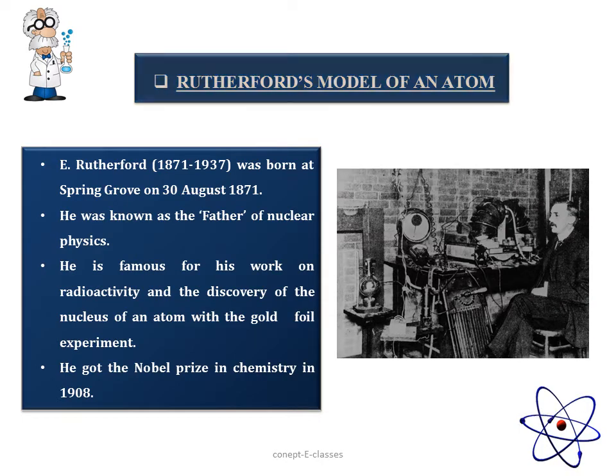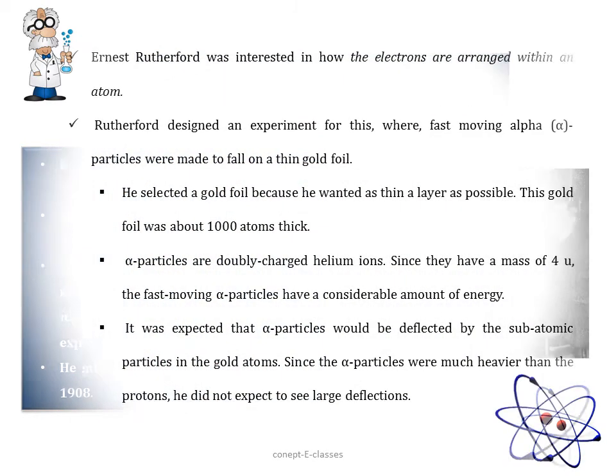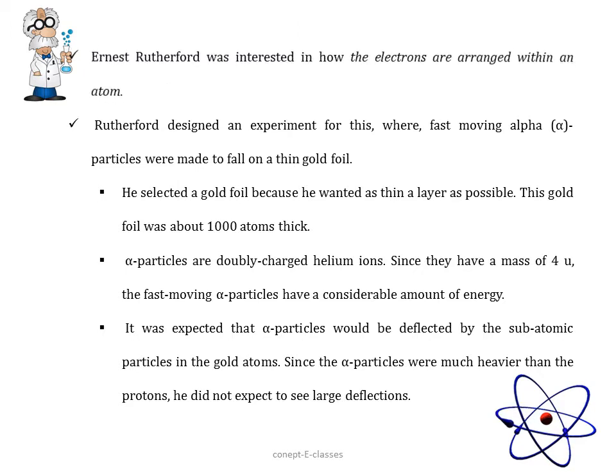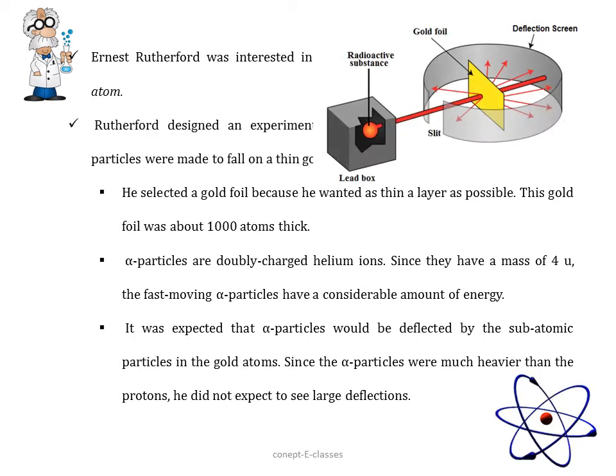Rutherford's model of an atom. Ernest Rutherford was born at Spring Grove on 30th August 1871. He was known as the father of nuclear physics. He is famous for his work on radioactivity and the discovery of the nucleus of an atom with the gold foil experiment. He got a Nobel Prize in chemistry in 1908. Ernest Rutherford was interested in how the electrons are arranged within an atom. In order to understand it, he designed an experiment where fast-moving alpha particles were made to fall on a thin gold foil.